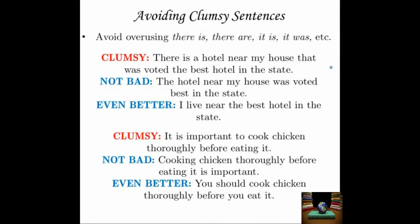Also, if you want to avoid clumsy sentences, avoid overusing 'there is,' 'there are,' 'it is,' 'it was,' and so on. Usually these phrases are just filler. Unless you're talking about something very specific like a geographic location or a few idiomatic uses, you very often don't need those phrases. So it's clumsy to say 'there is a hotel near my house that was voted the best hotel in the state.' That's long and much longer than it needs to be. It's not bad to say 'the hotel near my house was voted best in the state,' although 'was voted' is still in the passive voice.